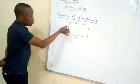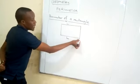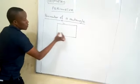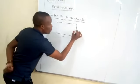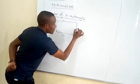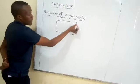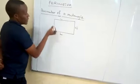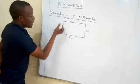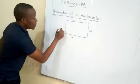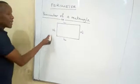A rectangle also has two sides which are equal. The short sides we call them width. Here is width and there is width. We represent them by the letter W.